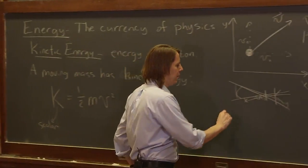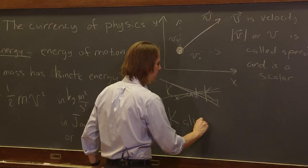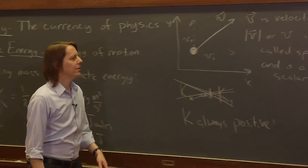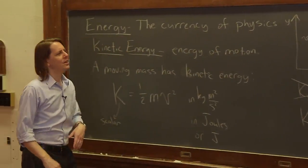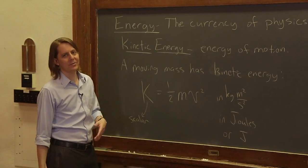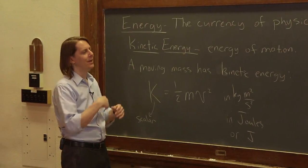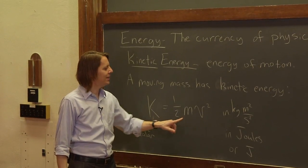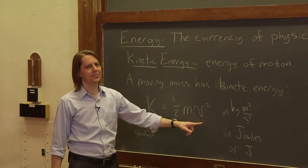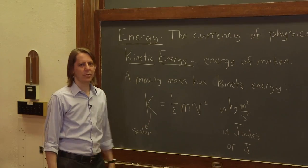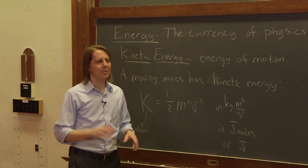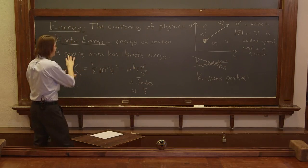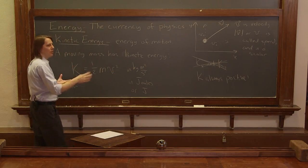Also, kinetic energy K is always positive. Even if you mistakenly treat speed as negative because something is going backwards, it doesn't matter — you're squaring it. Mass can't be negative, one half can't be negative, and any real number squared is non-negative. So kinetic energy is always a positive scalar with no components. Keep in mind what it represents: how much energy an object has available for interaction, and that energy goes up as the speed squared.